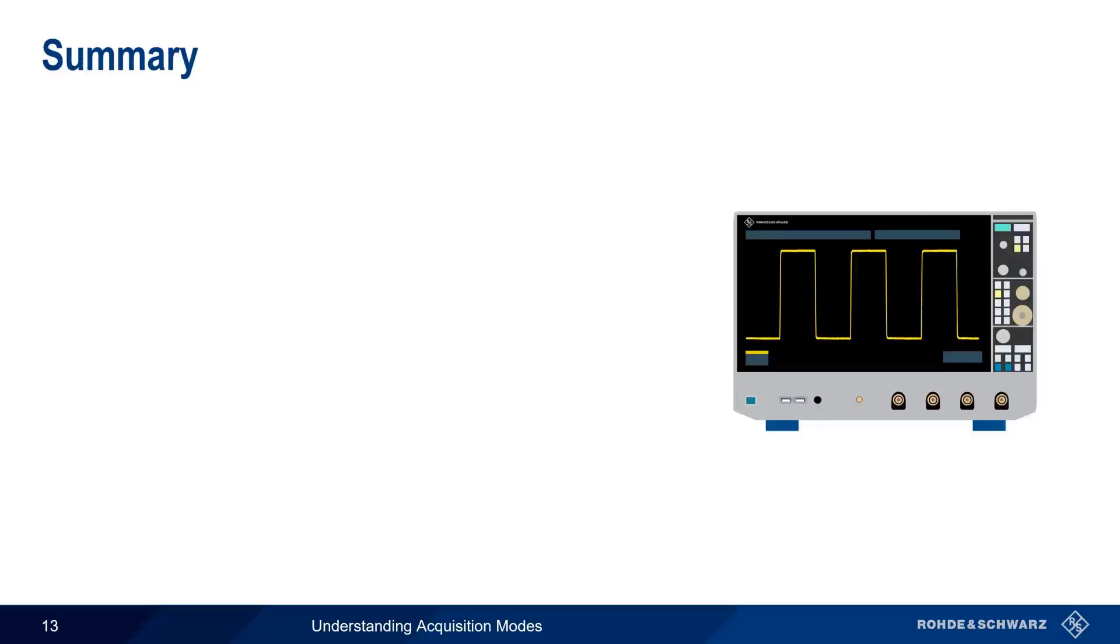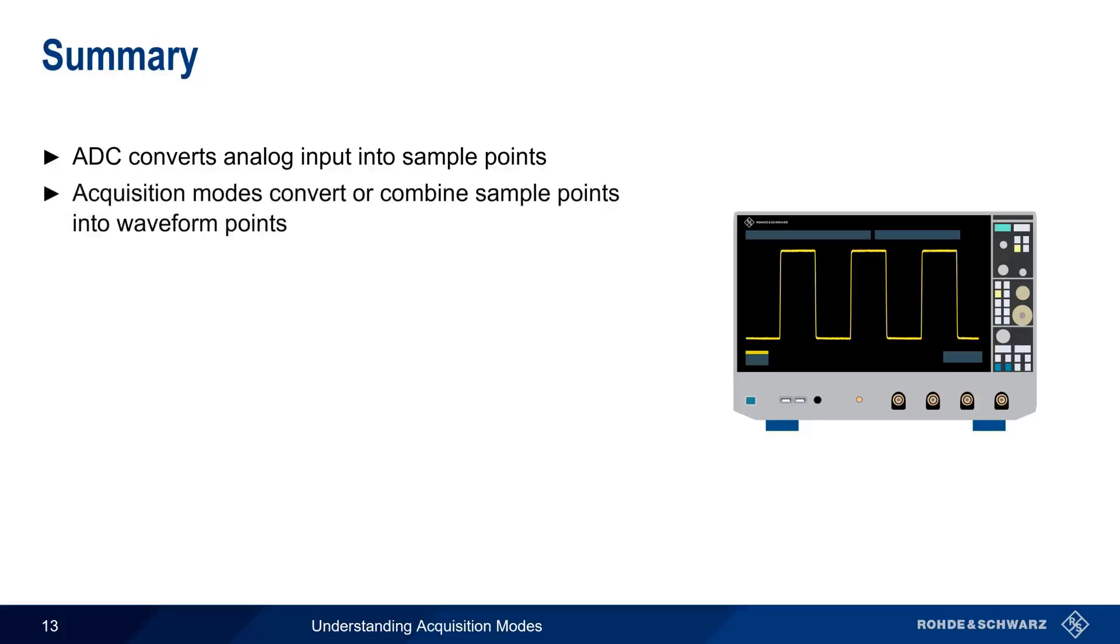Let's end with a brief summary. Digital oscilloscopes use an analog-to-digital converter, or ADC, to convert the analog input signal into digital sample points. Because there are often many more samples than necessary, various acquisition modes are used to convert or combine these sample points into waveform points. These waveform points are then used to generate the waveform that's displayed on the oscilloscope screen.